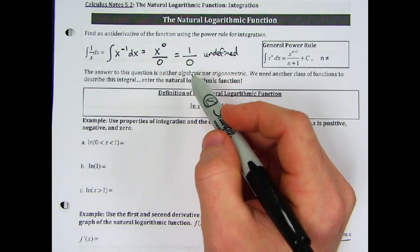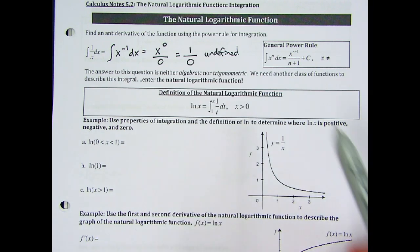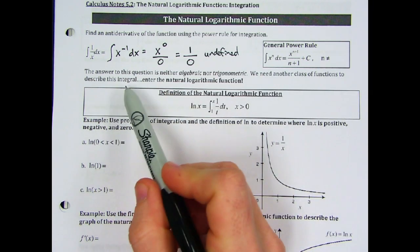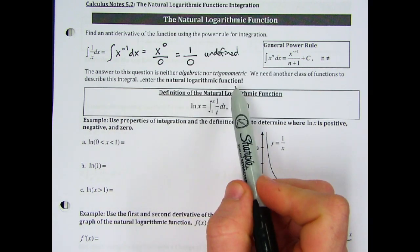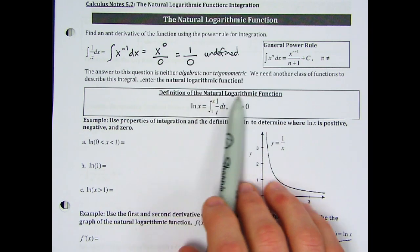Any time in math when we come up against something that is undefined or doesn't work, we simply create new math. We know that the antiderivative must exist because we can see that the integral is there. However, we don't have the means to express this, so we need another class of functions to describe this integral — enter the natural logarithmic function. Here we get the actual definition of the natural logarithmic function.